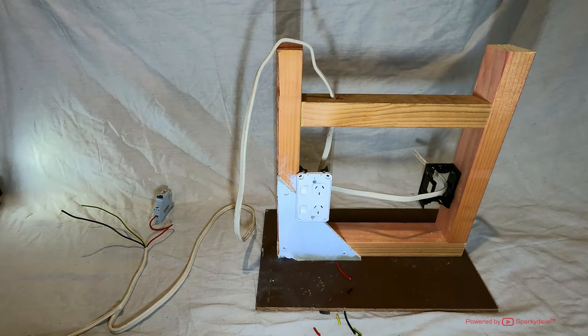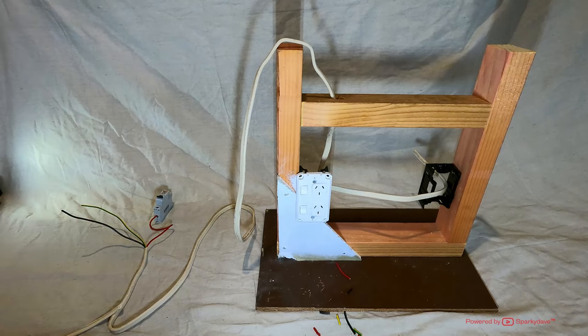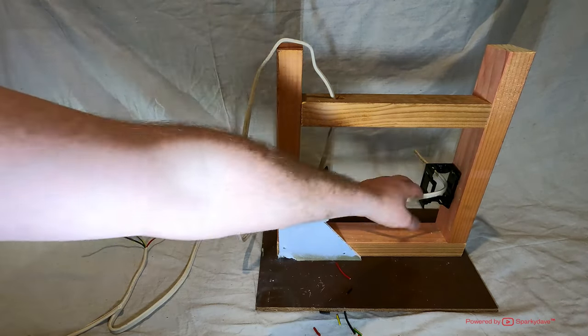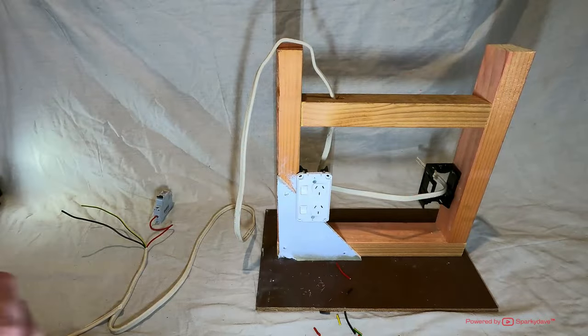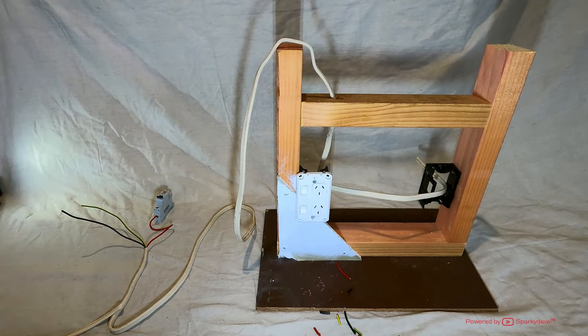Then the socket on the other side of the wall is just as explained in the previous video. Simple, there's one cable there. So the socket will be fit off exactly as shown in the previous video.